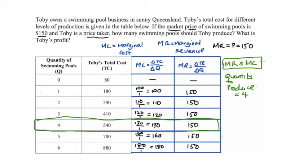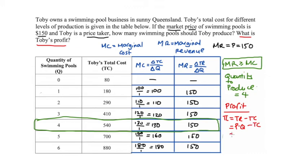From checking all levels of production, Toby's optimal output is four units. At this level he exhausts all production where marginal revenue is greater than or equal to marginal cost, without ever producing where marginal cost exceeds marginal revenue. Now we can calculate profit: total revenue is price times quantity, so 150 times 4 equals 600, and total cost from the table is 540. Profit is 600 minus 540, which equals $60.